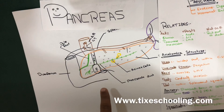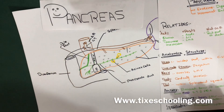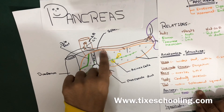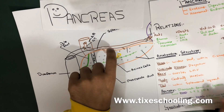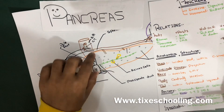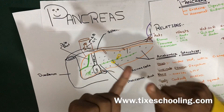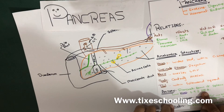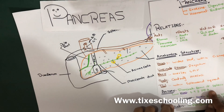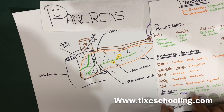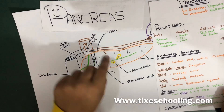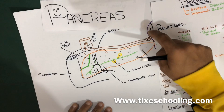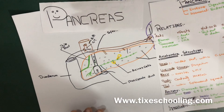The pancreas is supplied by the pancreatic branches of the splenic artery. The head is additionally supplied by the superior and inferior pancreaticoduodenal arteries, coming from the celiac trunk and superior mesenteric arteries respectively. The main arterial supply to the pancreas is the pancreatic branches of the splenic artery, which also gives branches to supply the pancreas as it courses toward the spleen.